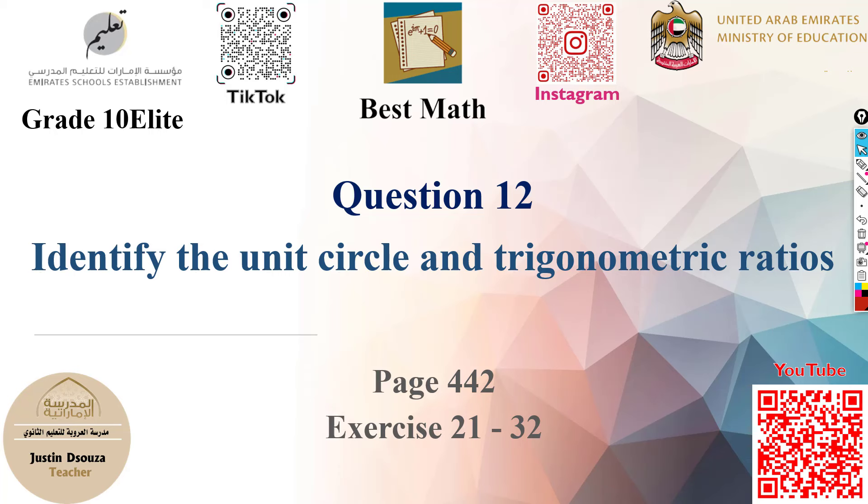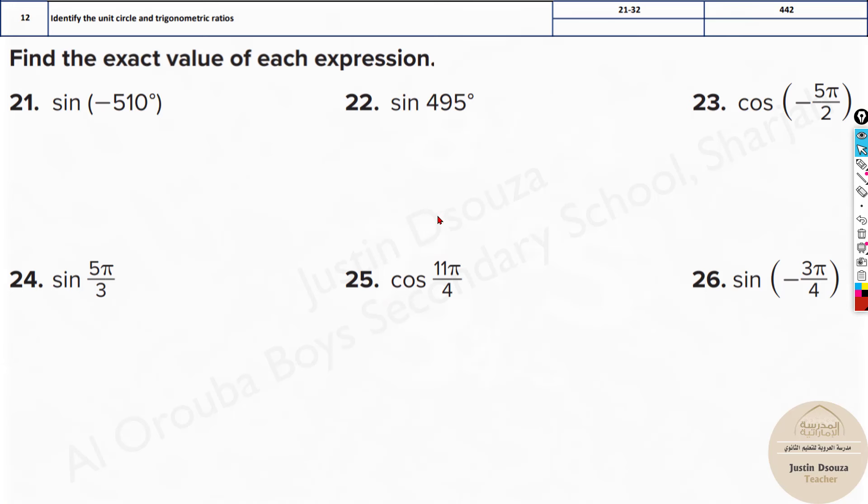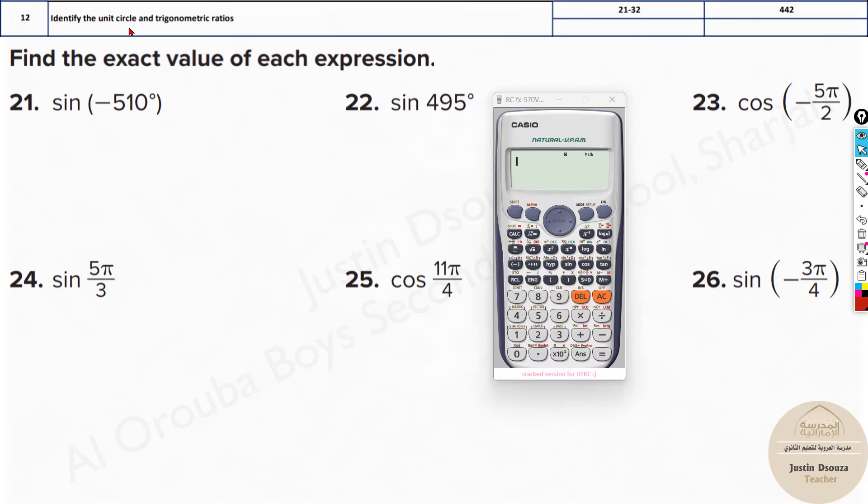Question 12 is to solve trigonometric ratios. In fact, over here the angles are given and the trigonometric function is given. This is so simple and direct in calculators. Though they have mentioned it's from the unit circle, here it is question number 12 in the MCQ part.